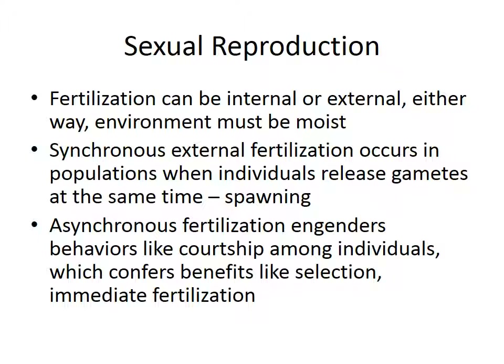Now we're going to look at full-fledged sexual reproduction. There are many steps, starting with fertilization: one egg has to be fertilized by one sperm. The fertilization can be internal or external, but either way the environment has to be moist. To address this, if an animal wants to do external fertilization, it could be synchronous — where populations get together and release gametes at the same time, known as spawning, as seen in fishes and amphibians.